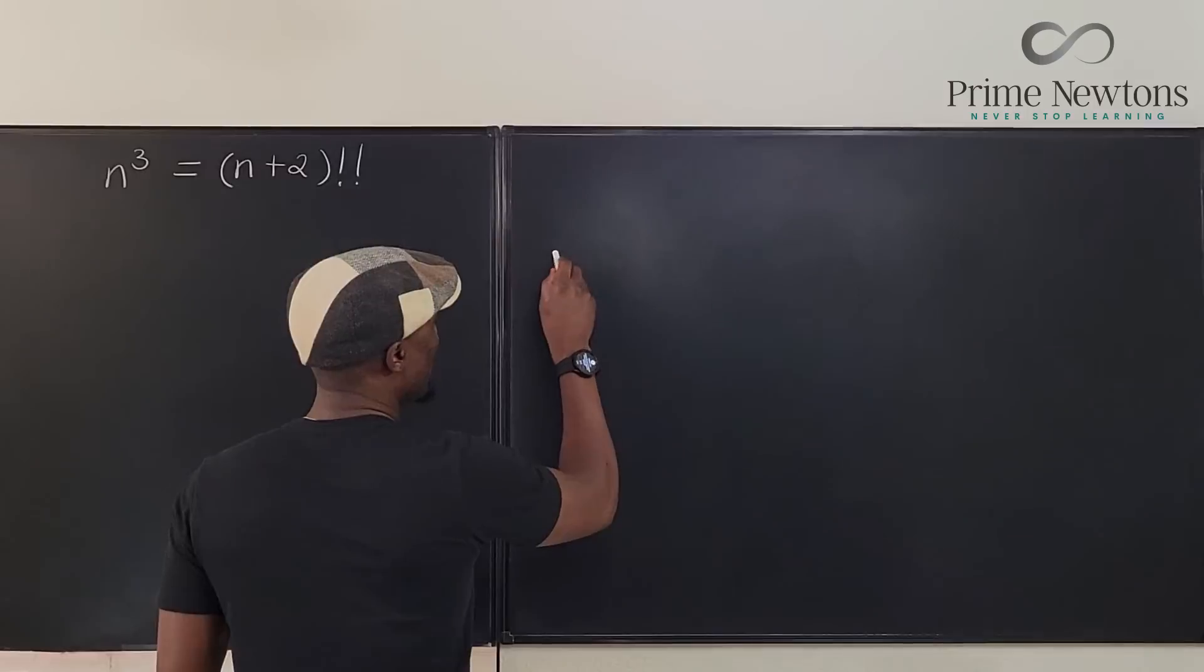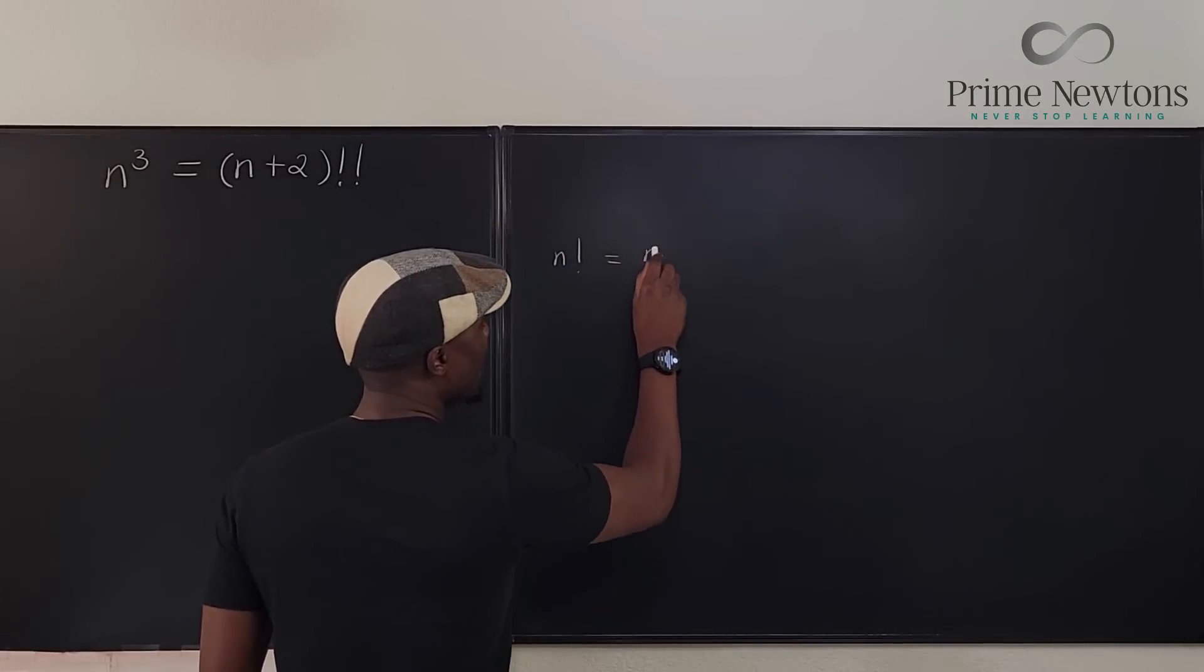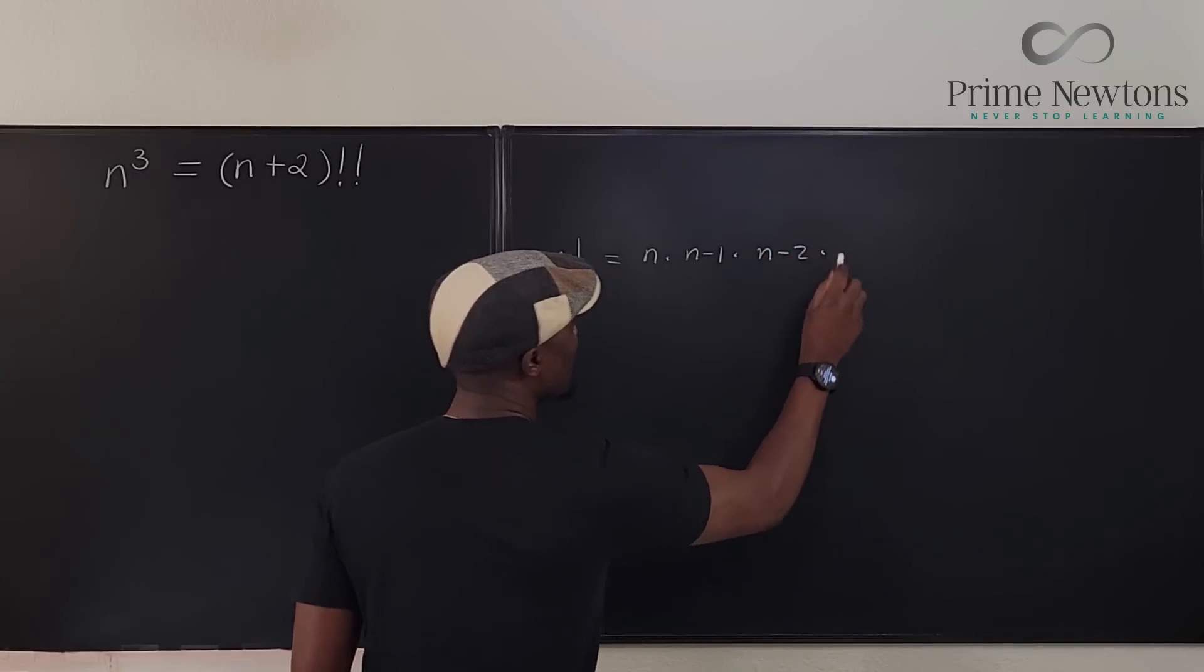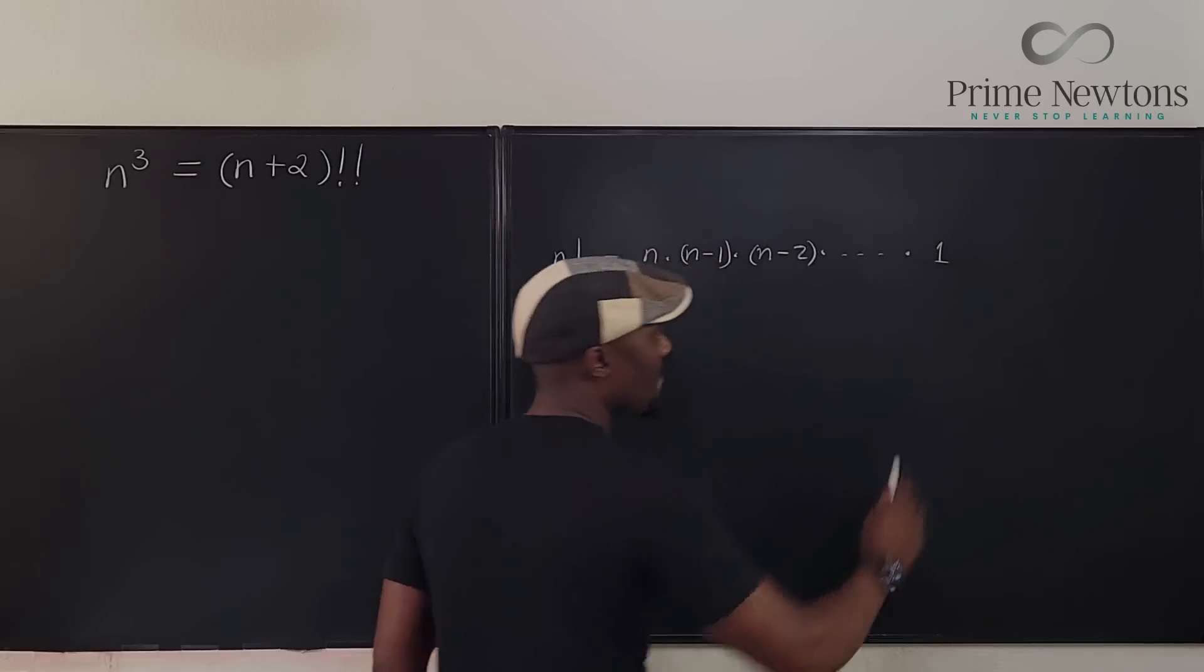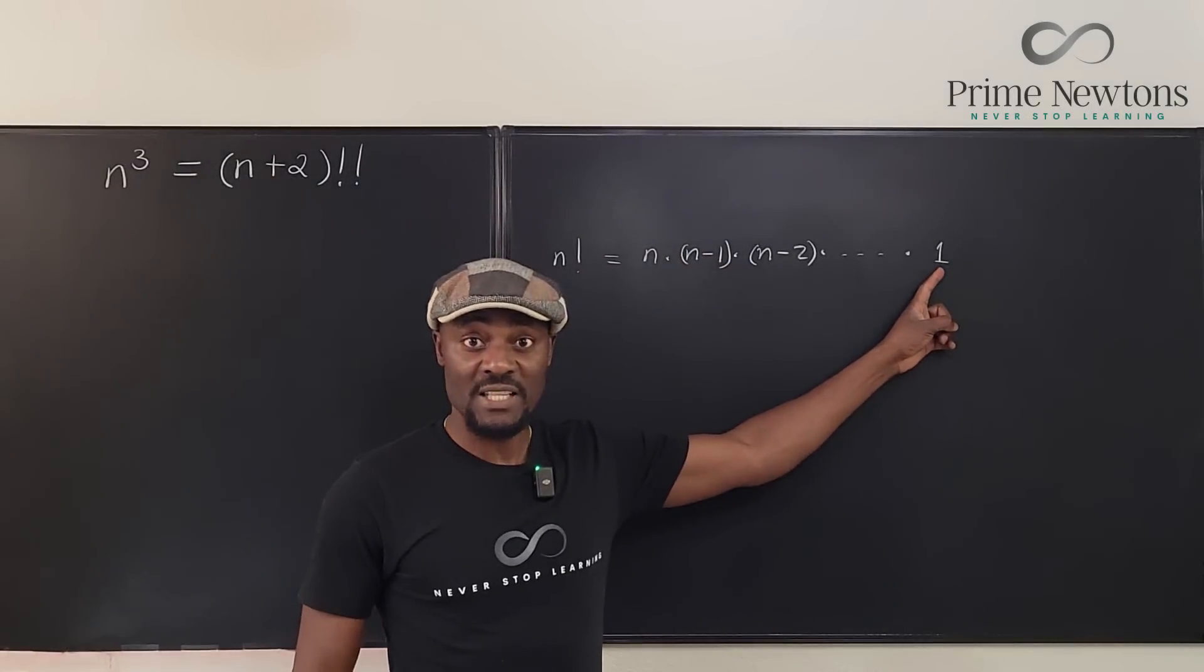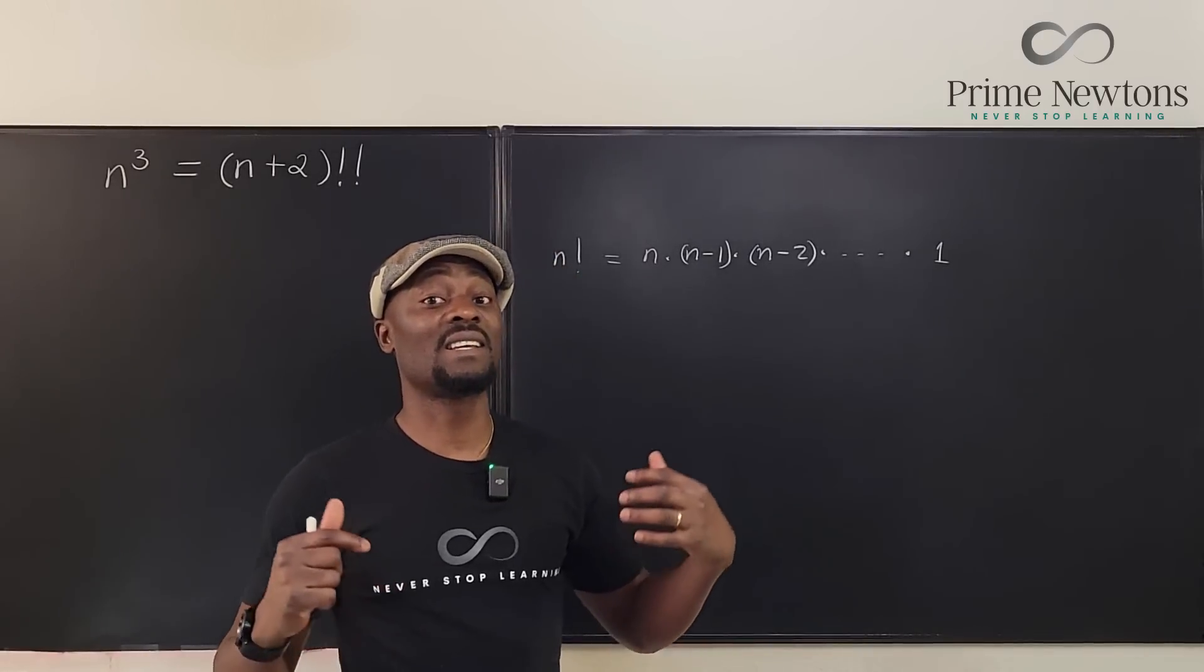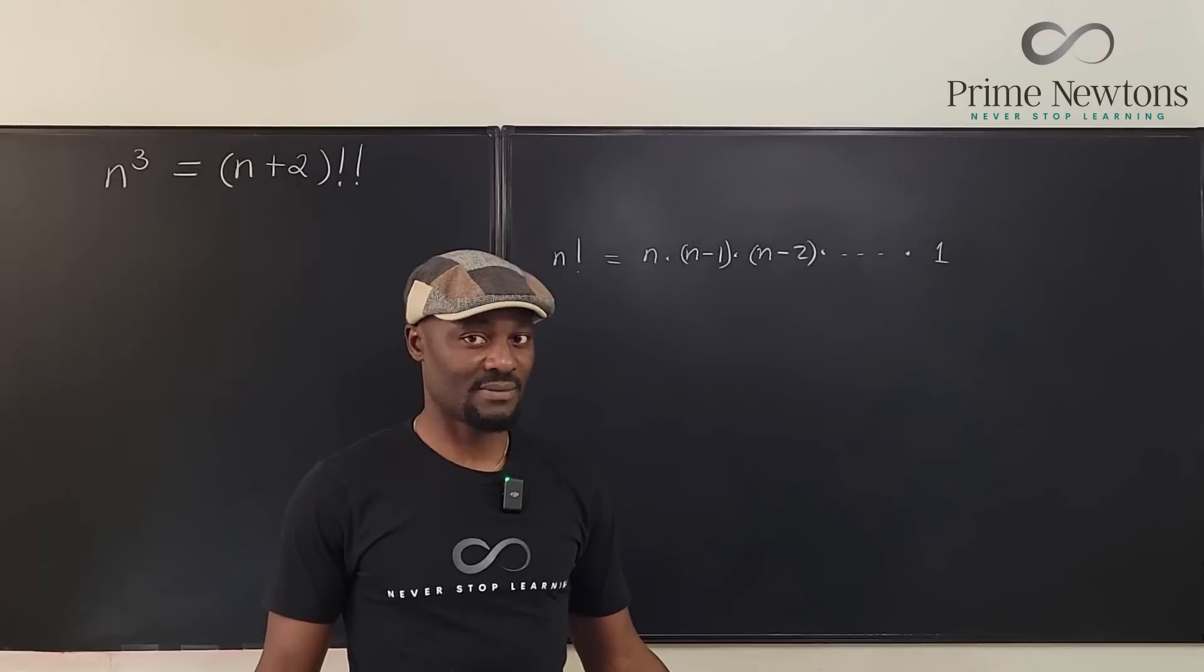we have n factorial can be written as n times n minus 1 times n minus 2 times. See, this is what you're doing until you get all the way to 1. But when you're doing a double factorial, you don't know whether you're going to end at 1. Sometimes you end at 1. Sometimes you end at 2.